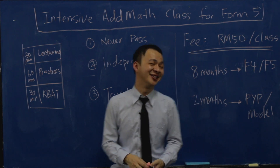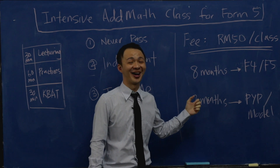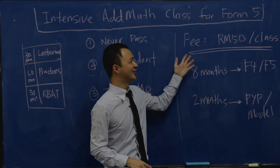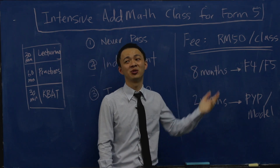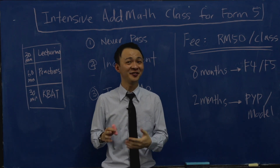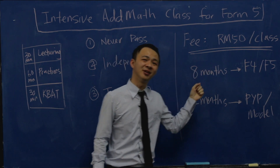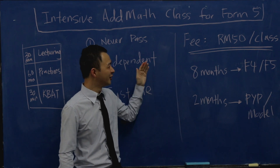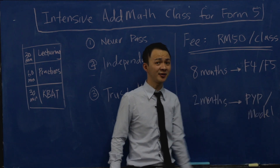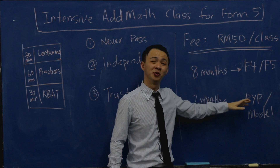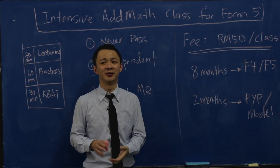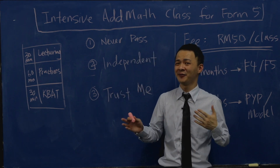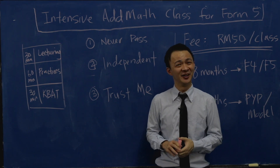About the fee: my class is not cheap — I charge RM50 per class. Some tuition centers charge RM50 per month, so with four classes in a month that comes to RM200 per month, which is quite expensive. It's very important that you don't waste your parents' money. If you come, I plan to use about eight months to finish all the Form 4 and Form 5 topics, then two months for past-year papers and module papers. I'll do my best to help you go from failing to an A — or at least a B.